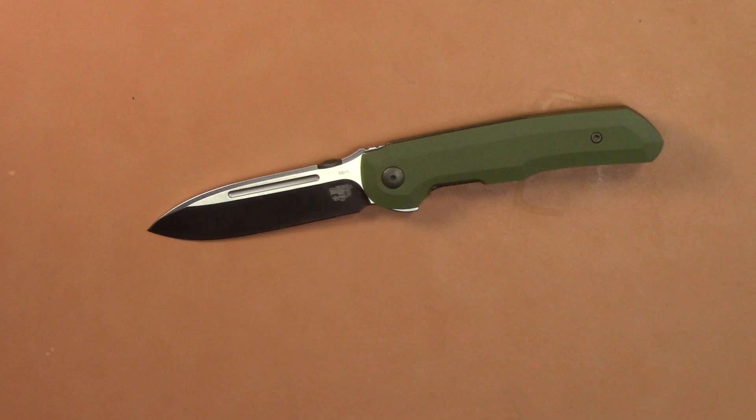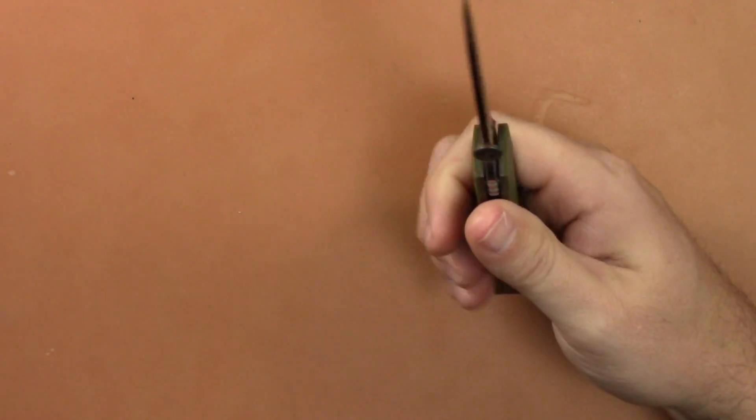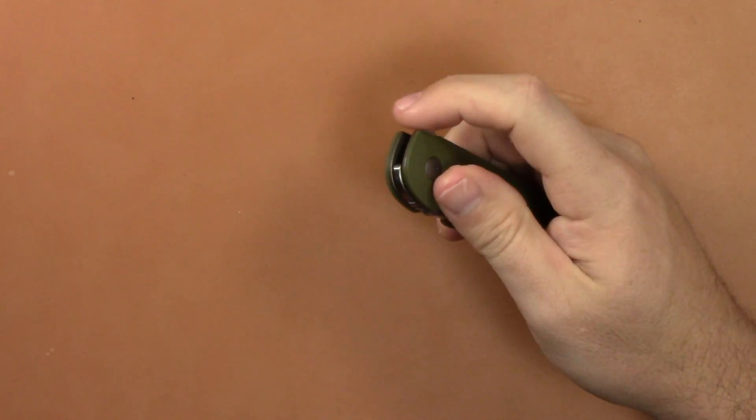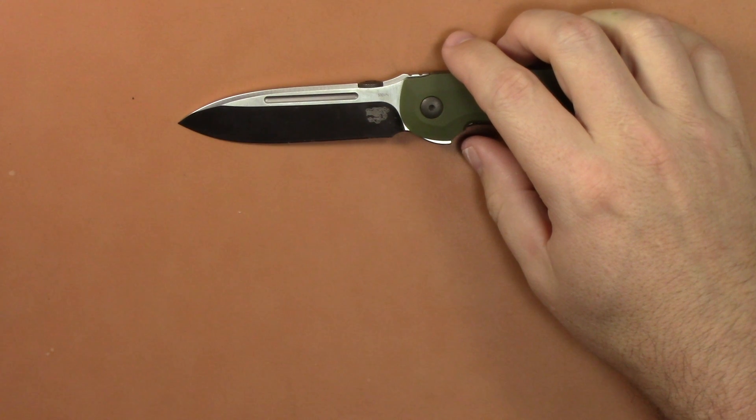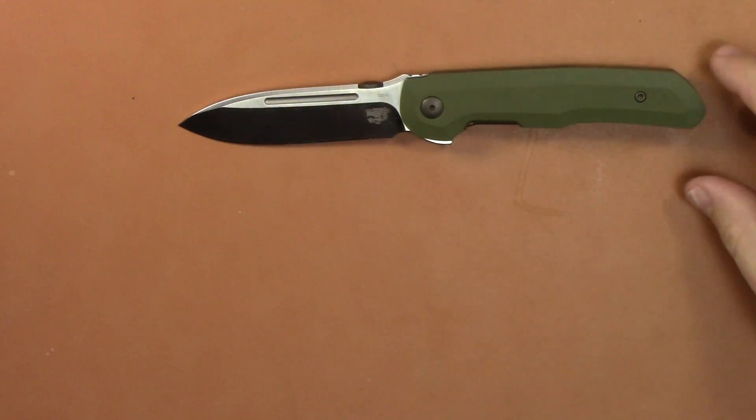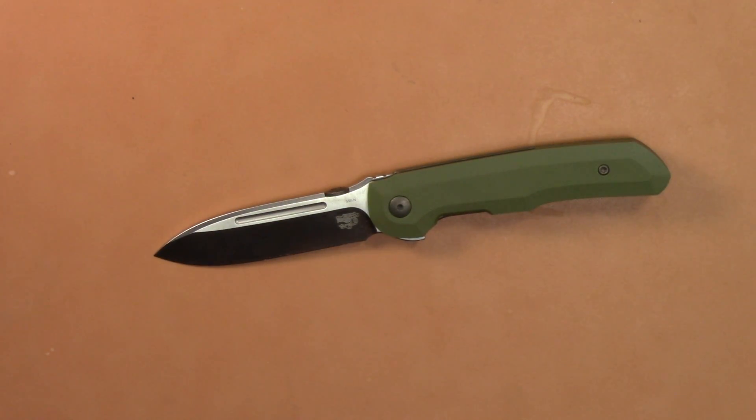Ceramic detent ball, hardened steel stop pin and pivot. You have a length of 3.2 inches on the blade, 0.128 thickness. Closed length is 4.4 and your handle width is just right at a half inch, which is pretty normal. Overall length 7.6, weighs 3.1 ounces. So there's all your specs and all that important stuff.